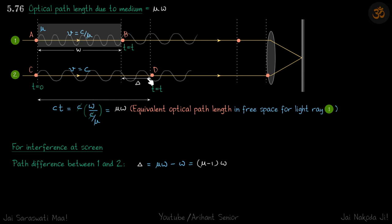This distance in free space becomes c times the time taken, which is c × (w/(c/μ)) = μw. So μw is the equivalent optical path length in free space for ray 1 passing through the medium. We use the term 'equivalent' because point B is in the same phase as point D, and in free space that point is located at a distance μw.